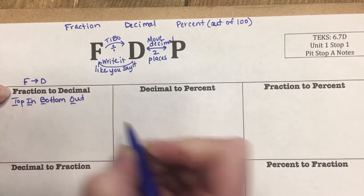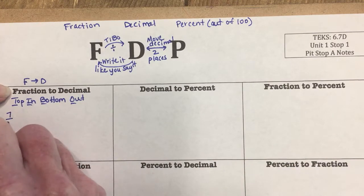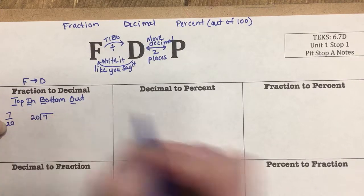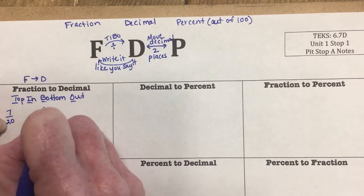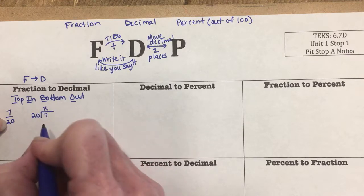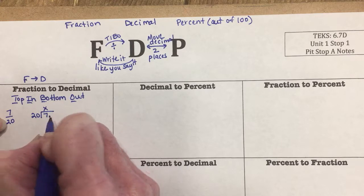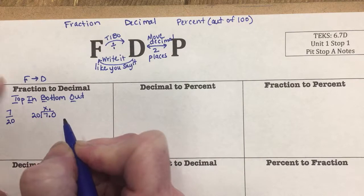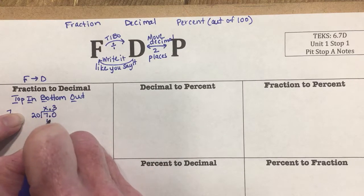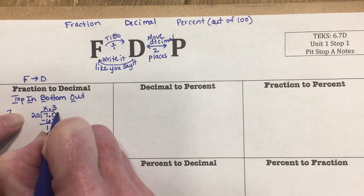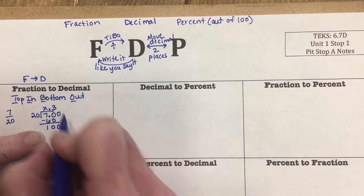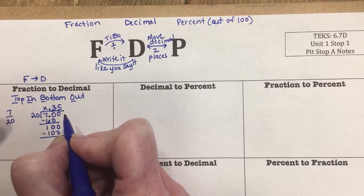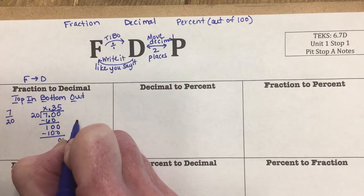For example, with 7/20: the top number, 7, goes inside the division house, and 20 goes outside. I can't divide 20 into 7, so I add a decimal point and a zero. 20 goes into 70 three times — 3 times 20 is 60, remainder 10. I add another zero: 20 goes into 100 five times exactly. So 7/20 as a decimal is 0.35.